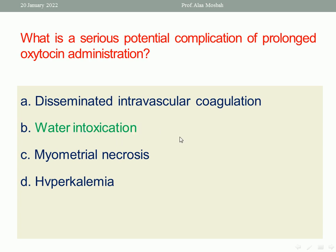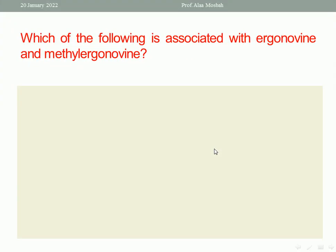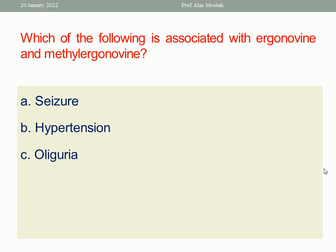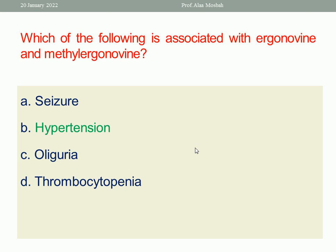Next question: which of the following is associated with ergonovine (ergometrine) — seizures, hypertension, oliguria, or thrombocytopenia? The answer is hypertension. That is why in patients with hypertension in pregnancy we try to avoid using ergometrine after delivery of the baby, using oxytocin infusion instead.